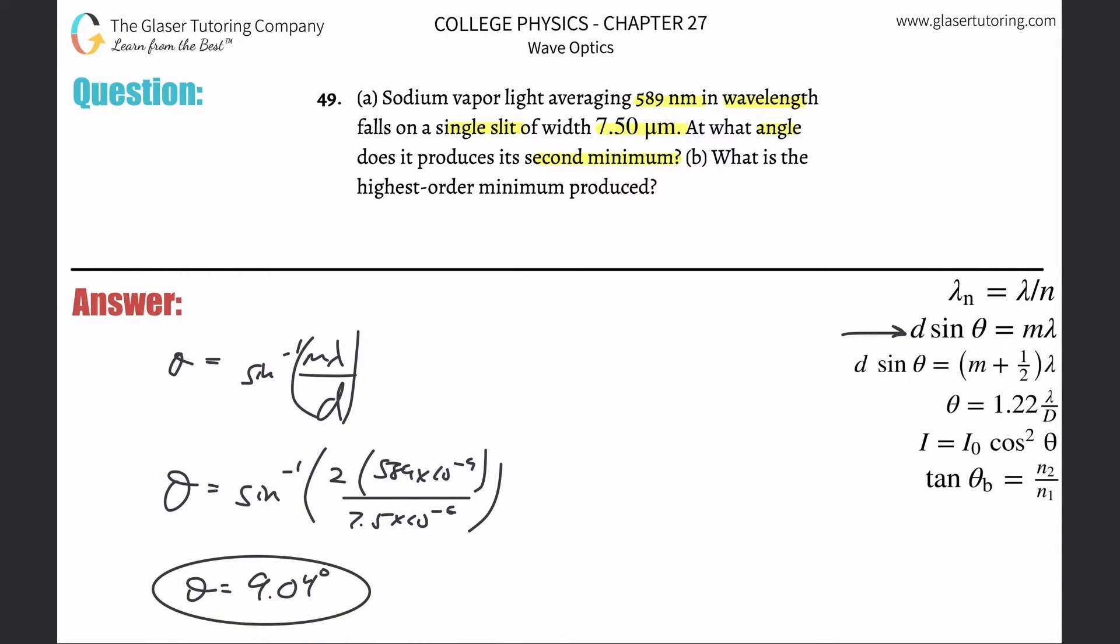Part B: What is the highest order minimum produced? Let's write down the formula again: d sine theta equals m lambda. We're trying to find the highest order produced. I'm going to solve this for sine of theta. Divide out the d from both sides.